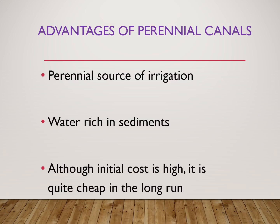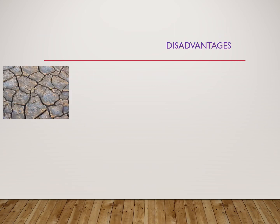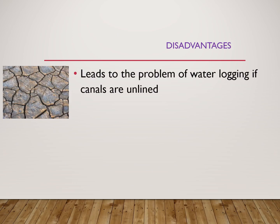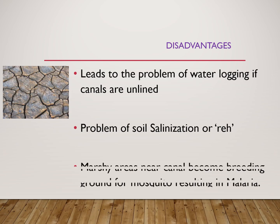Although the initial cost of making perennial canals is very high, in the long run over a long period of time the costs become very low. Some disadvantages of perennial canals: if the canals are unlined — that is, not cemented on either side — there can be the problem of waterlogging on the sides of the canal. Sometimes these canals may have the problem of soil salinization, meaning too much silt mixes into the water. If areas near the canal have waterlogging problems they can become marshy and become breeding grounds for bacteria and mosquitoes, resulting in various diseases.